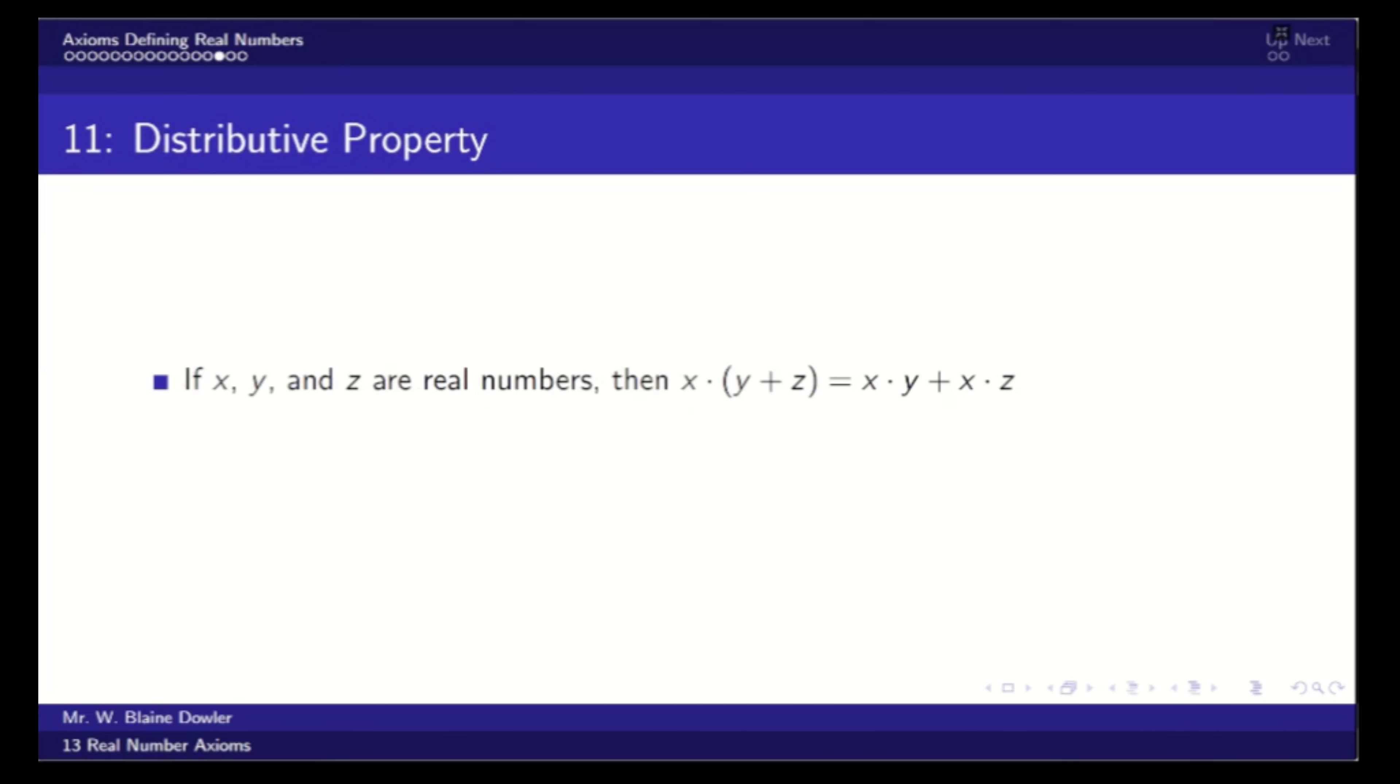Axiom 11 is the distributive property. So if we have three real numbers, two being added, and the third one outside being multiplied through brackets, well, we take the number outside and multiply it by each of the numbers on the inside. If you want to see why this must be, take one rectangle that is x by y, another rectangle that is x by z, and stick them together. Now you have a rectangle that's side x on one side, and length y plus z on the other. And the area has to be the sum of the two areas. So this defines how addition and multiplication mix.